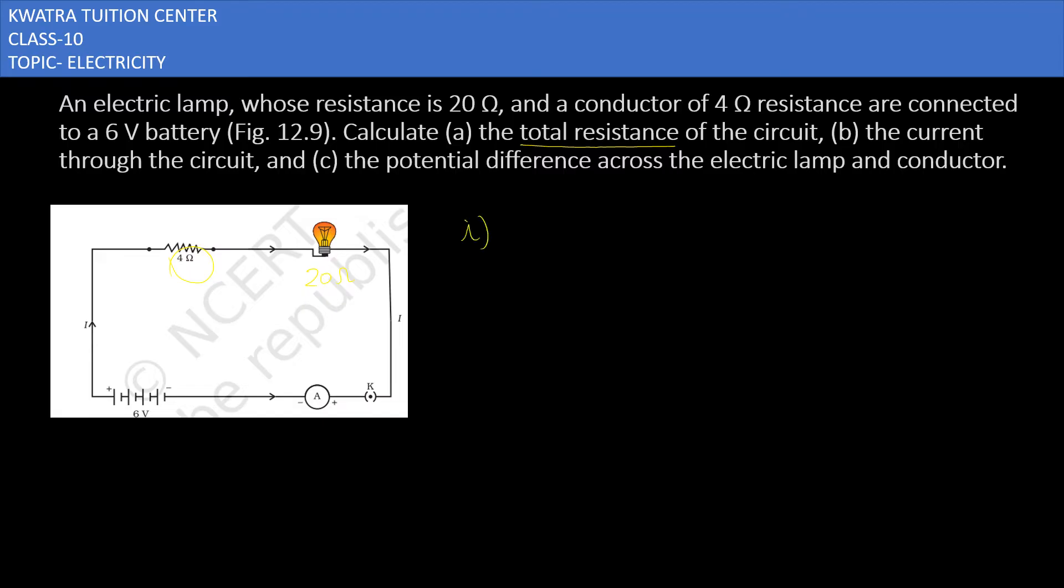And in this series, what will be our total resistance? You can add these two. 20 plus 4 will give you 24 ohm. That's it. Second part.